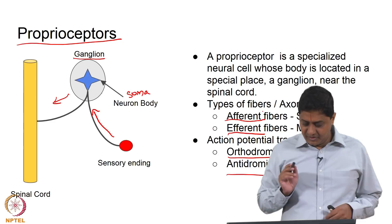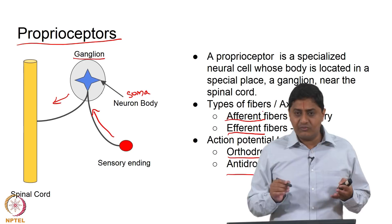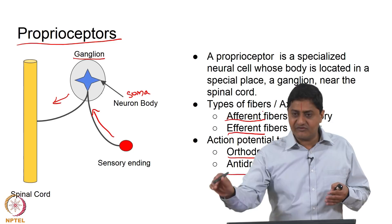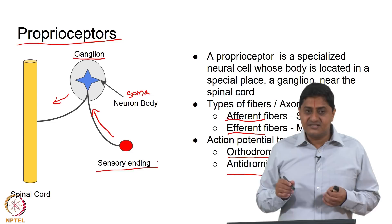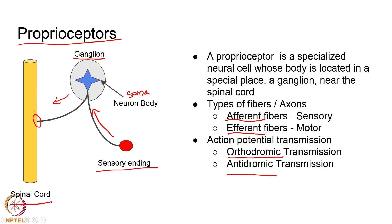The proprioceptor neurons have both orthodromic and antidromic conduction. They get information from a sensory ending at the point of sensing and send the information to the spinal cord. What happens at the spinal cord and where the information goes will be reserved for future classes. Our interest today is in how muscle spindles alone function.